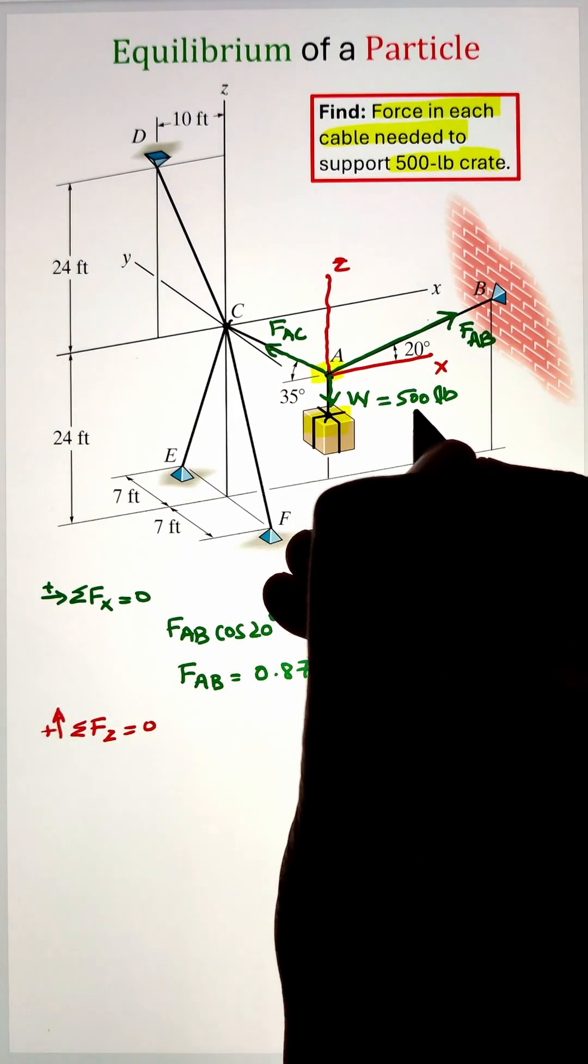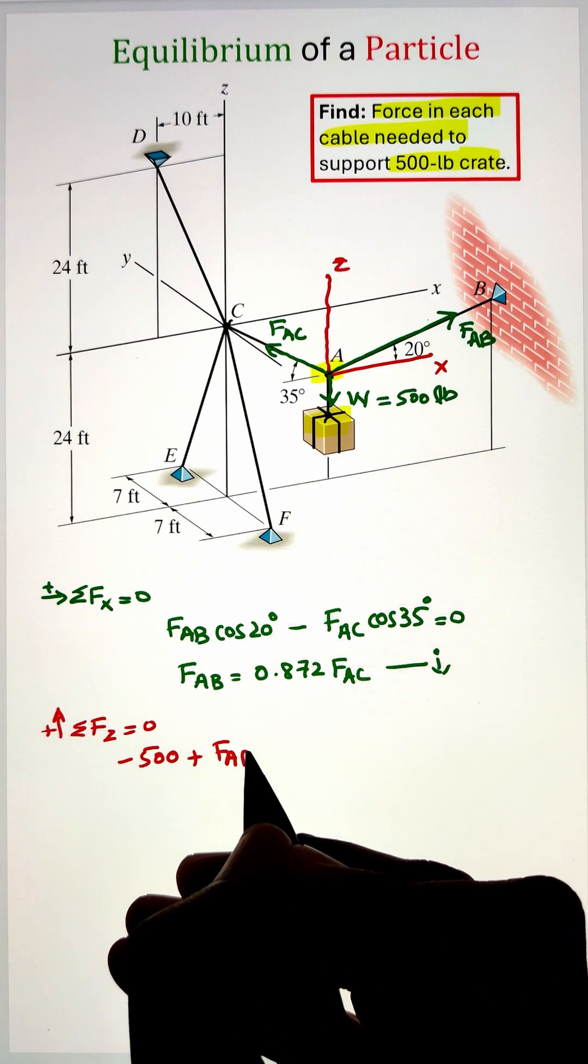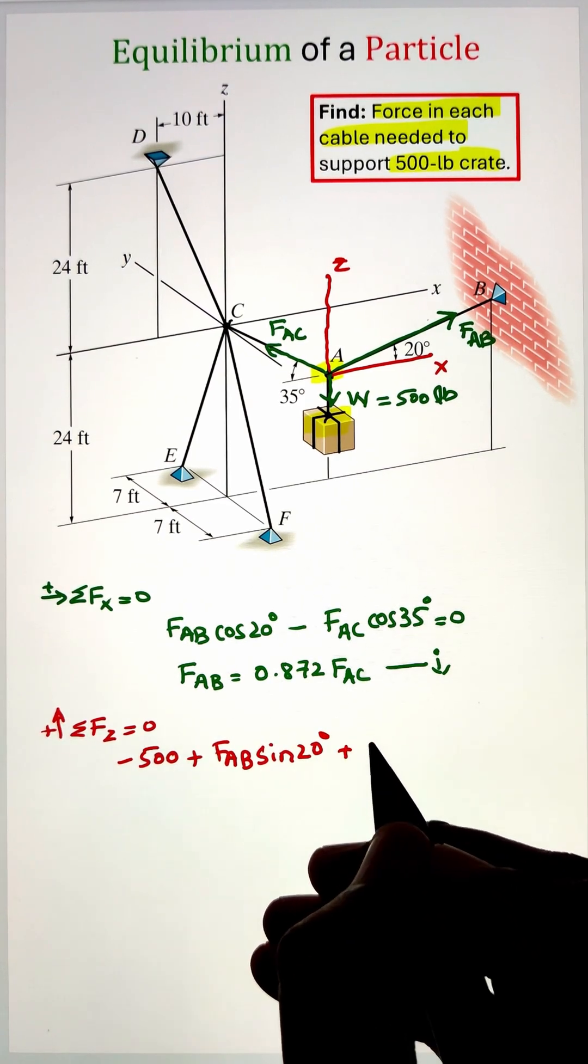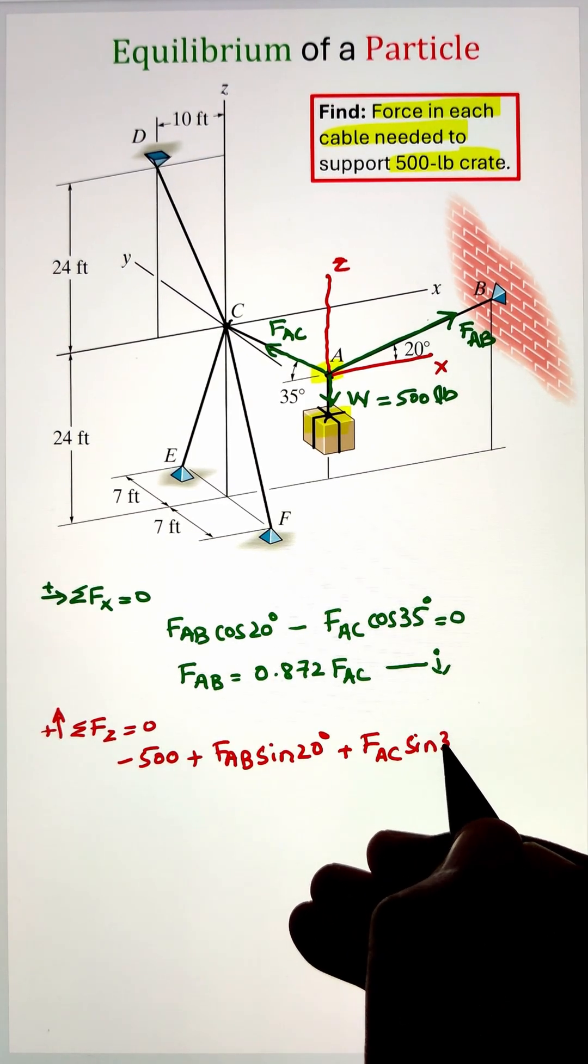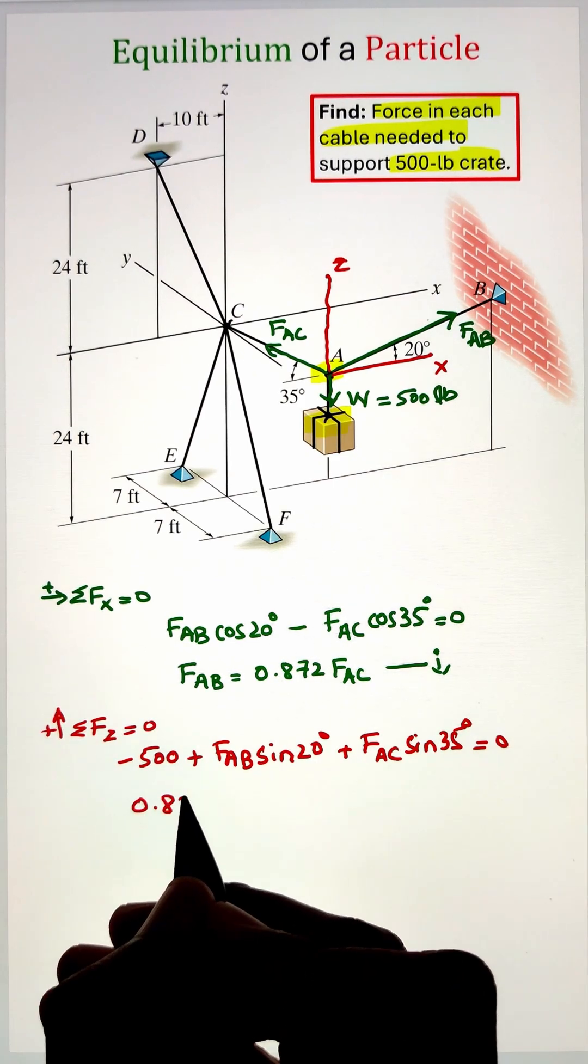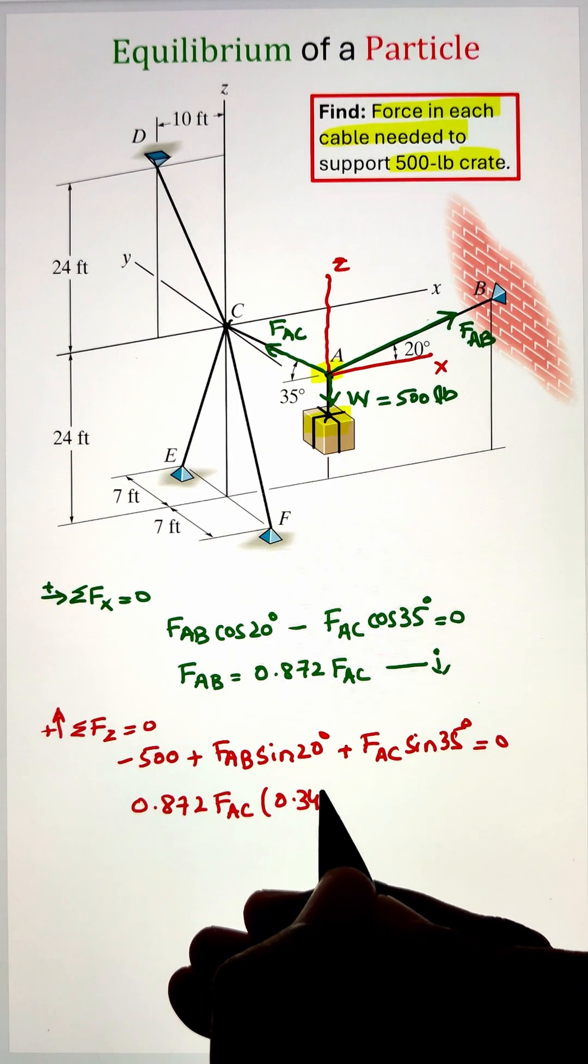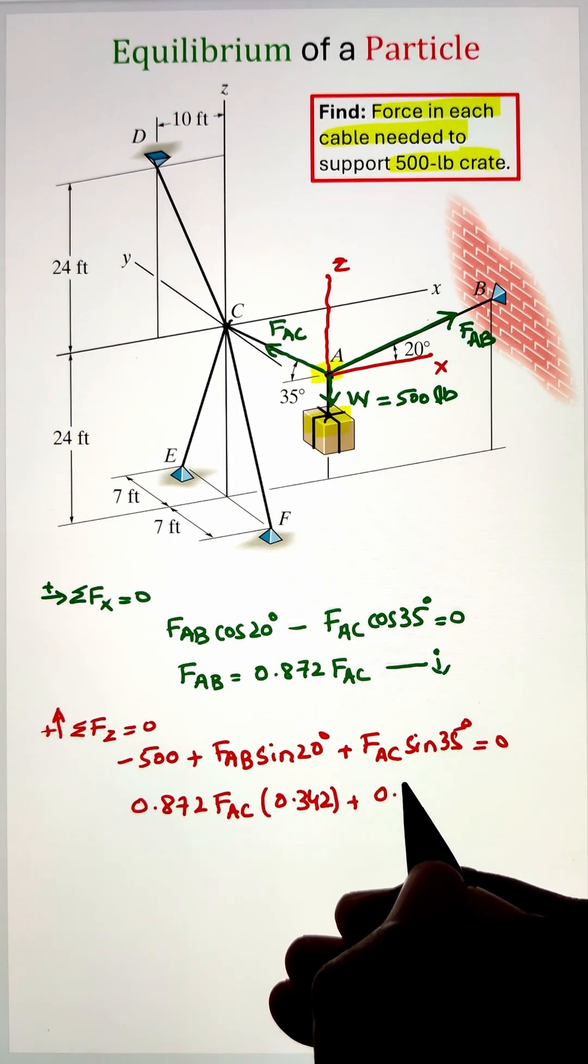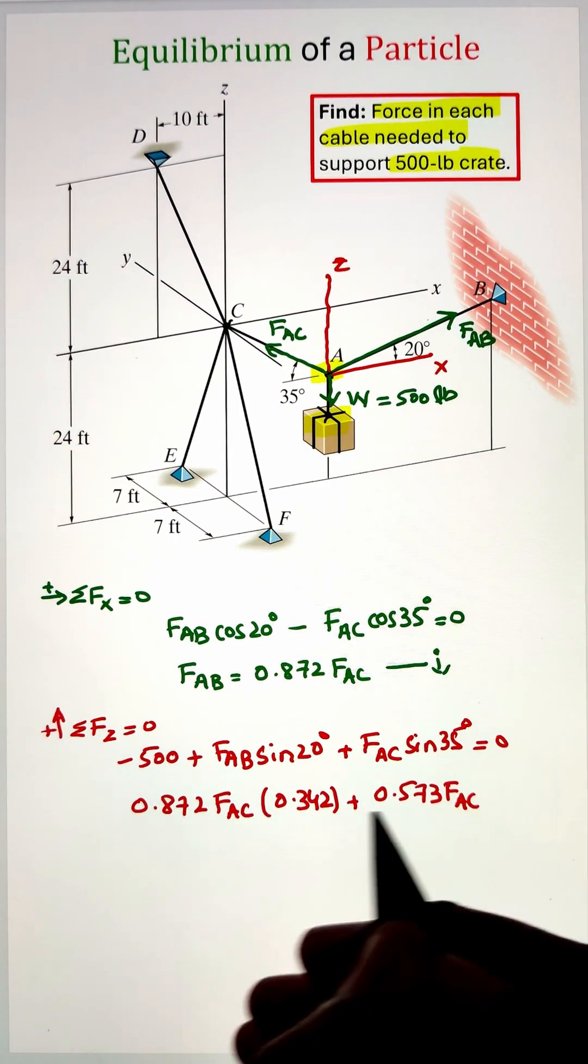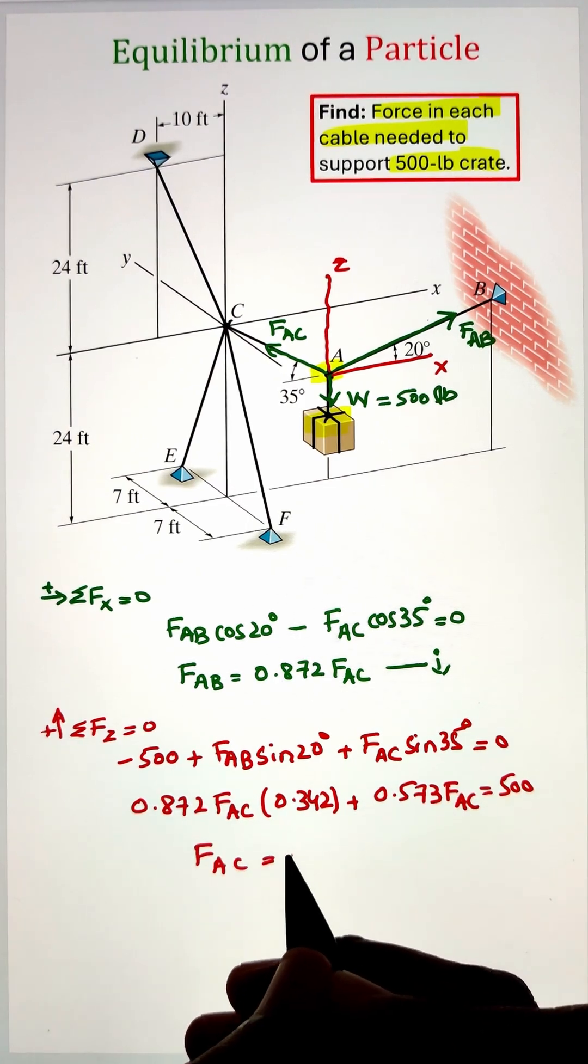Next we can do the summation of forces along the z-axis. Here the weight of the crate is acting vertically downward, that's why it is taken as negative, whereas the components of force FAC and FAB will be pointed in the upward direction. We can calculate those components by taking the sine function of 20 degrees and sine function of 35 degrees. Simplifying, we get the value of FAC as 574 pounds.